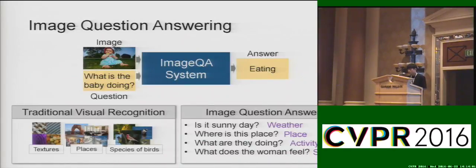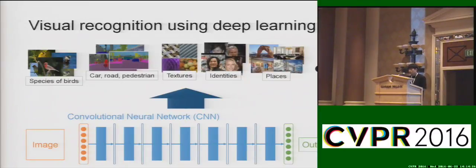Image question answering is a problem to answer questions related to an input image. Contrary to traditional visual recognition problems, which focus on single recognition tasks such as scene classification or object classification, image question answering provides a unified framework for solving various recognition problems at the same time by asking questions corresponding to those visual recognition problems. The motivation is that various visual recognition problems could be solved by training a single convolutional neural network across different visual recognition datasets.